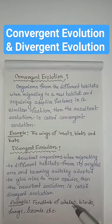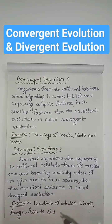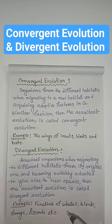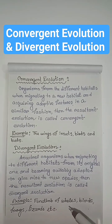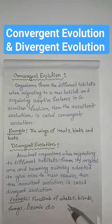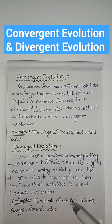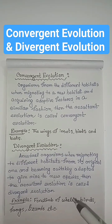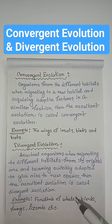For example, the four limbs of whales, birds, frogs, lizards, etc. The ancestors of these animals were identical, but during evolution, the structure of the four limbs changed according to the habitat.